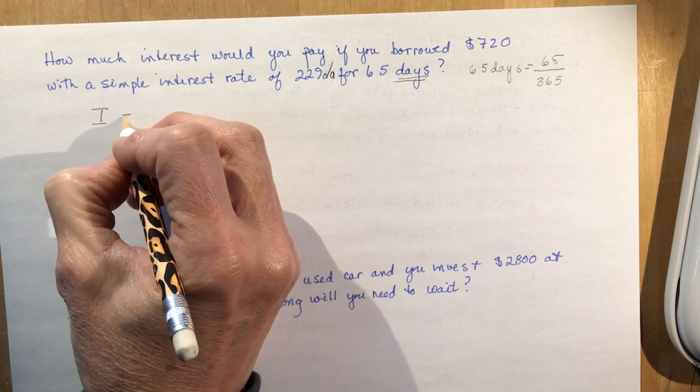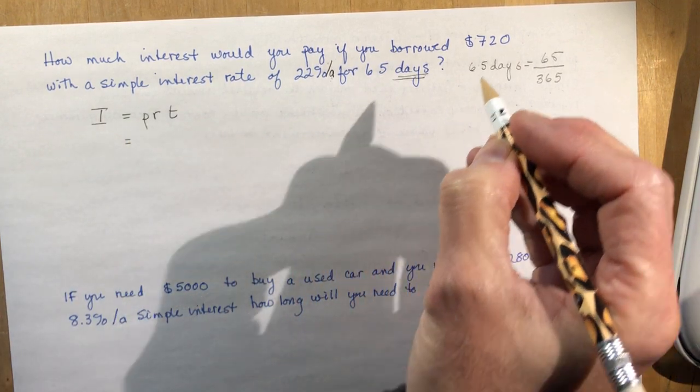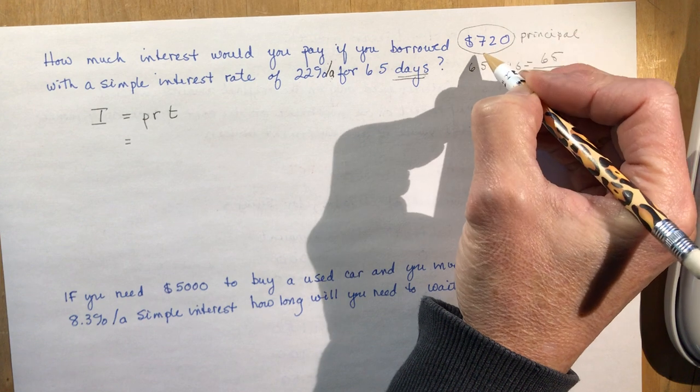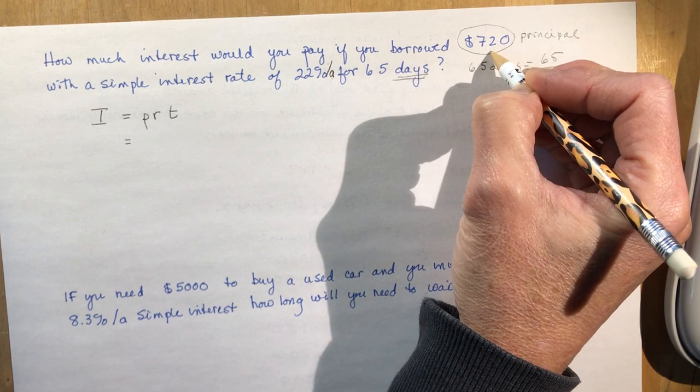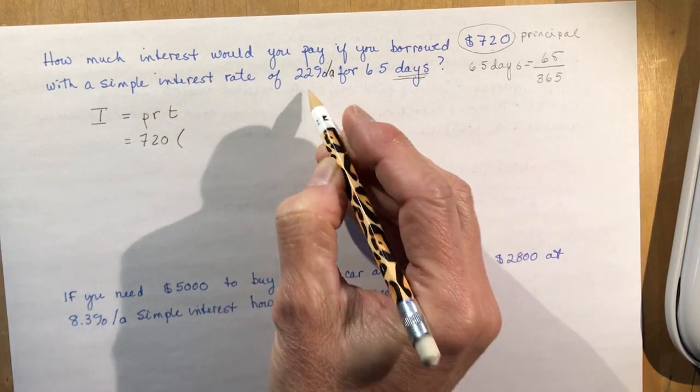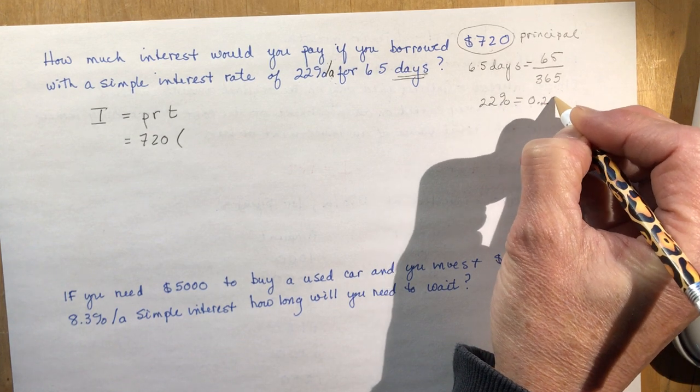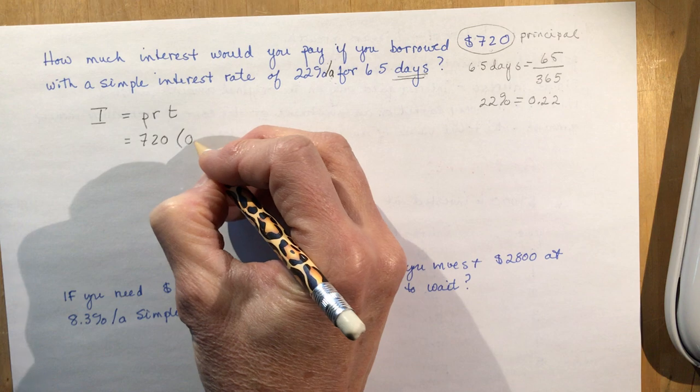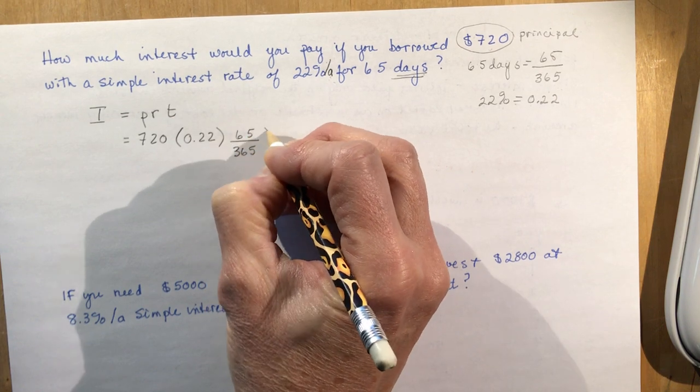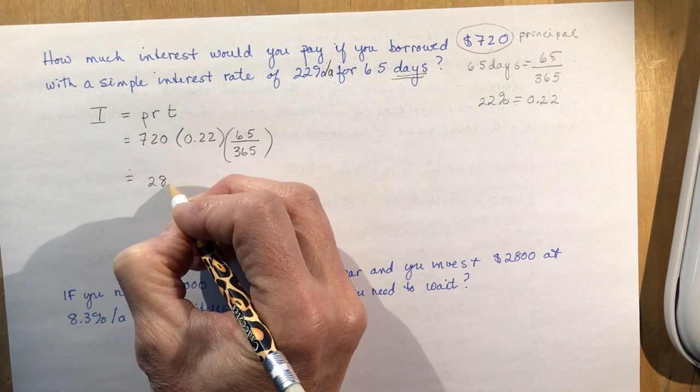The amount of interest earned: I equals P times R times T. My principal is 720. My rate 22%, which equals 0.22 as a decimal. And the time 65 over 365 days. If you multiply that all out, you get 28.21.